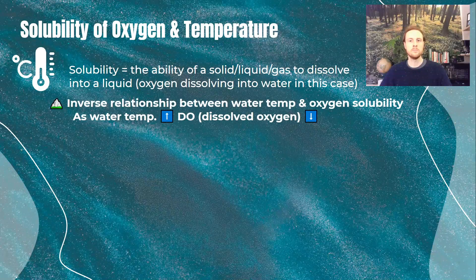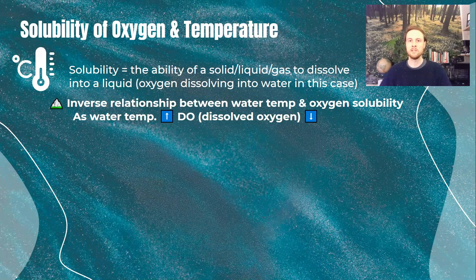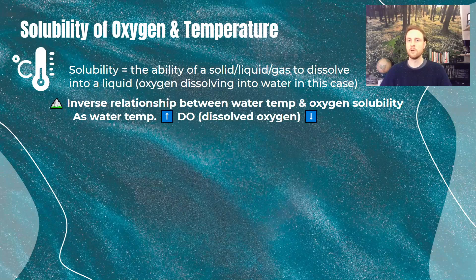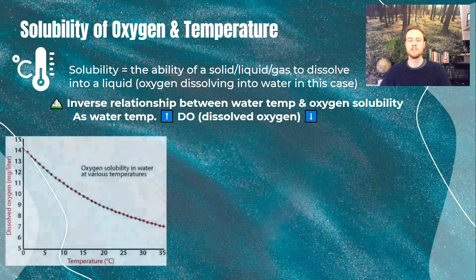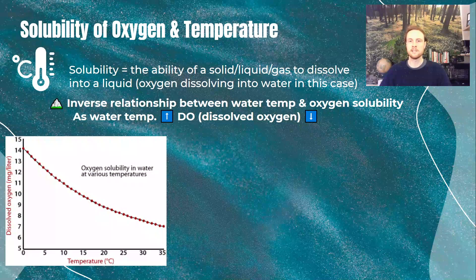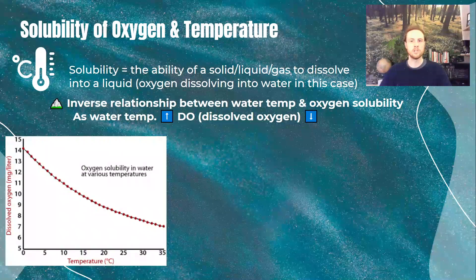This is going to be an example of an inverse relationship. As the temperature of water increases, the dissolved oxygen level of that water decreases. We can see this in a graph — as we go up in temperature on the x-axis, we see a drop in the amount of dissolved oxygen that the water can hold.